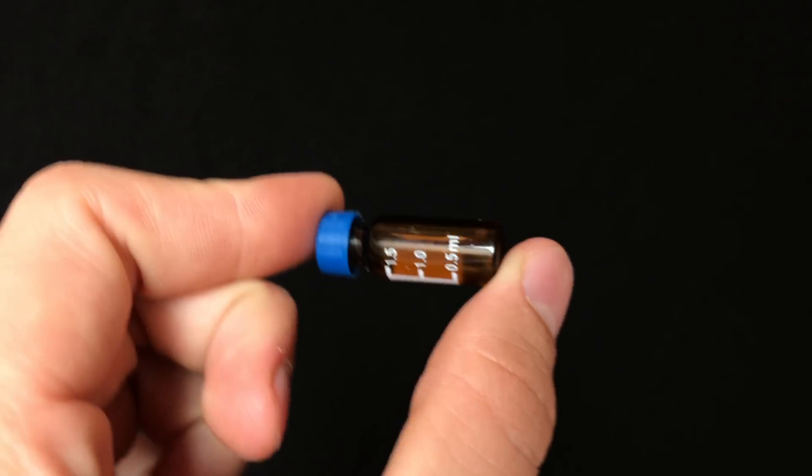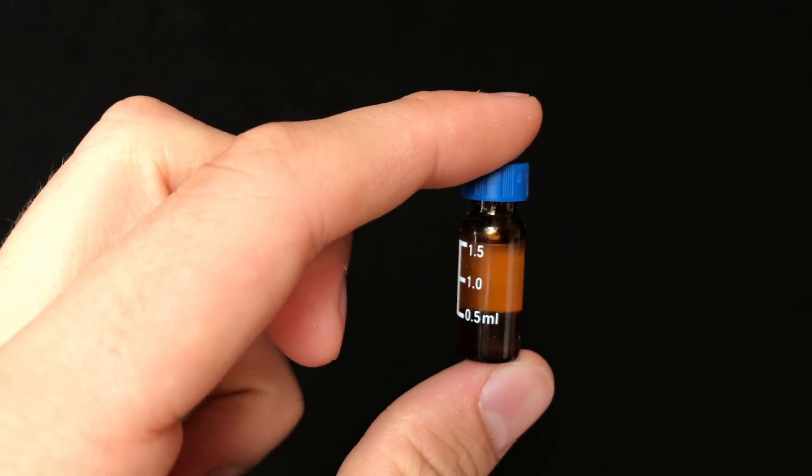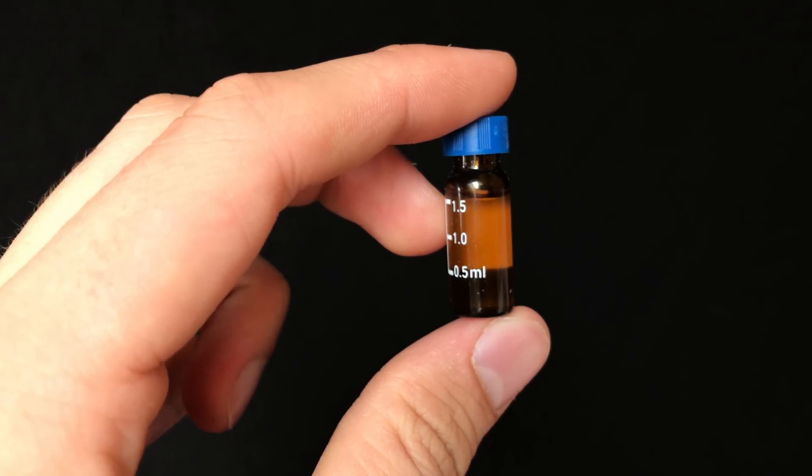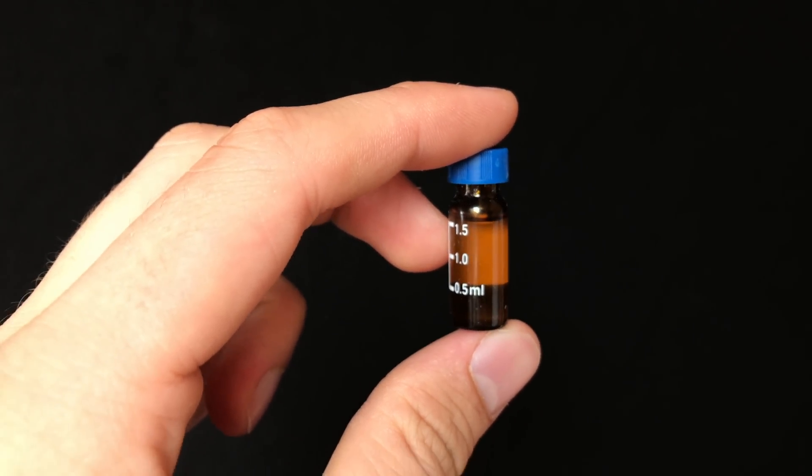And there you go. Today I've shown you how to extract nicotine from tobacco, how to make a few nicotine complexes, and how to make nicotine benzoate which is used in electronic cigarettes. I hope you enjoyed this video. See you soon.